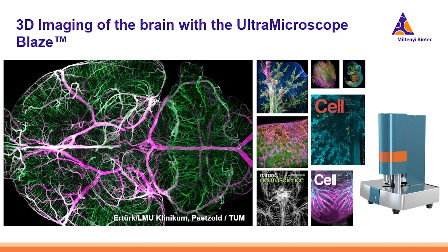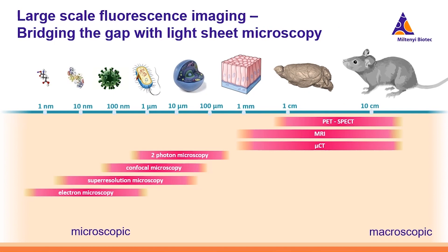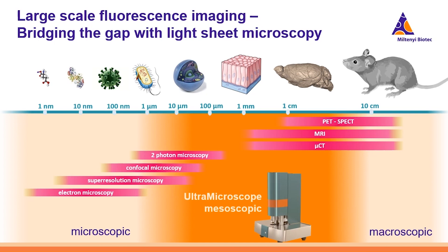Coming to the Ultramicroscope Blaze: this is a light sheet microscope, and you can see here some examples of when it was used in publications for the analysis of the brain and also other tissues. Light sheet microscopy covers a gap between confocal microscopy and two-photon microscopy, which cover smaller sizes at the cell level, and MRI, which covers the whole brain directly. The Ultramicroscope sits in the middle, showing cell structures but also including the whole brain anatomy, so you can track connections of neurons or see their location within the whole organ.